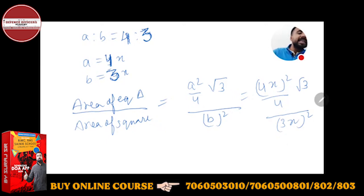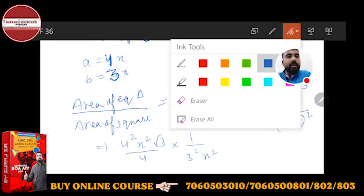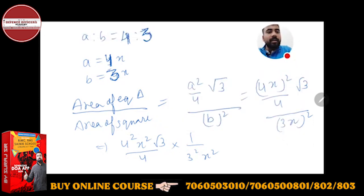Let's calculate. It's very easy. So 4 squared x squared root 3 upon 4 into 1 upon 3 squared into x squared. We have to solve it. So 4 cancels with 4, x squared cancels with x squared. What remains on top is 4 root 3, and on bottom is 3 squared which is 9.